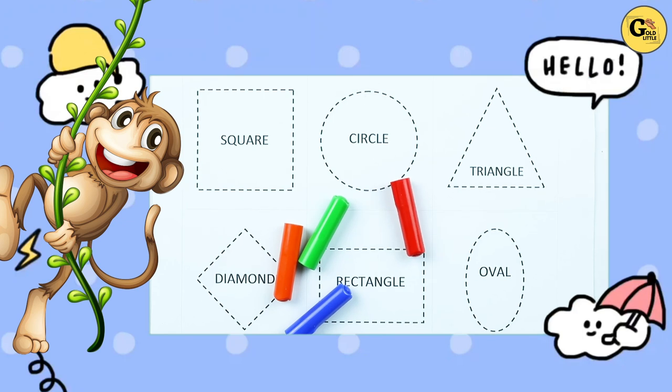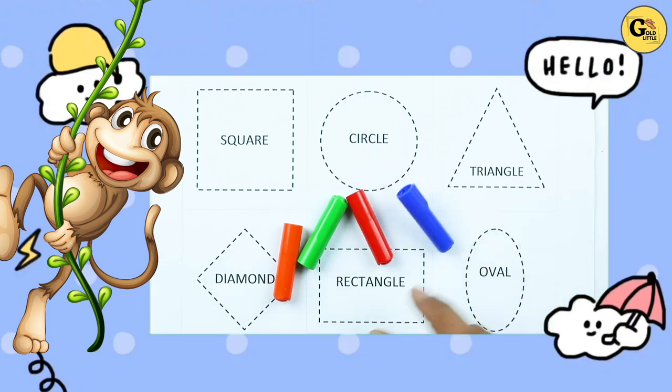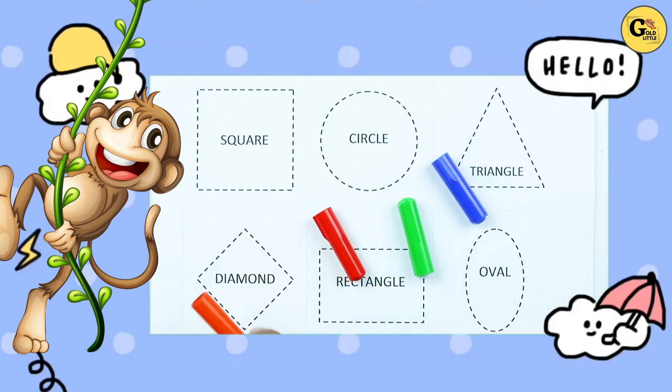Hello friends, today we learn shapes: square, circle, triangle, diamond, rectangle, oval with colors: red color, blue color, orange color, green color. Let's start.